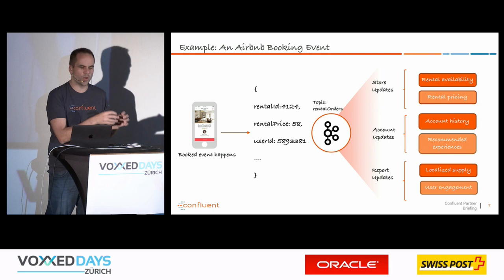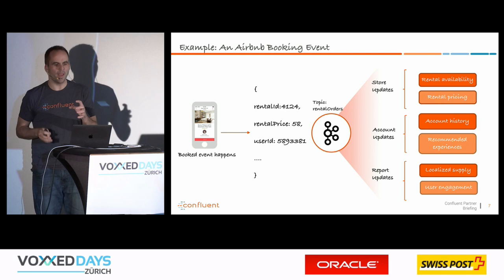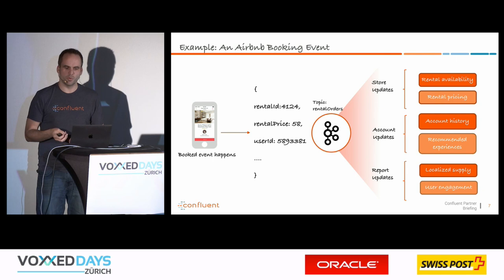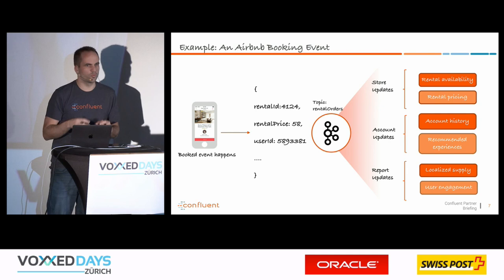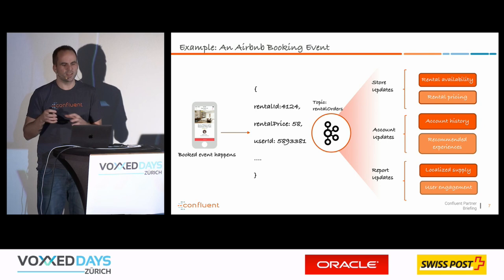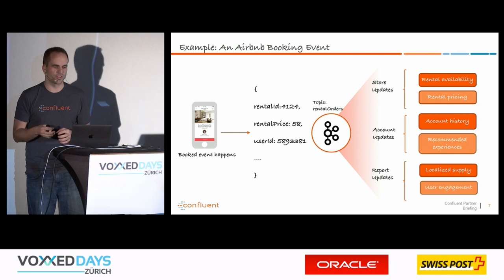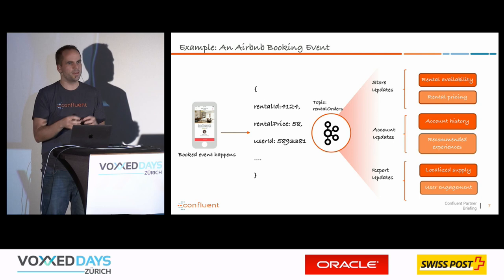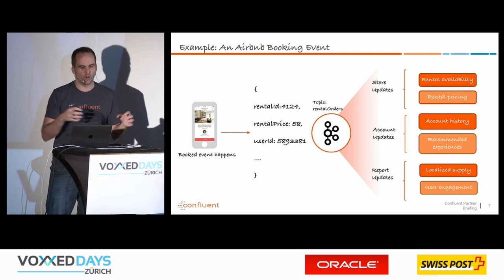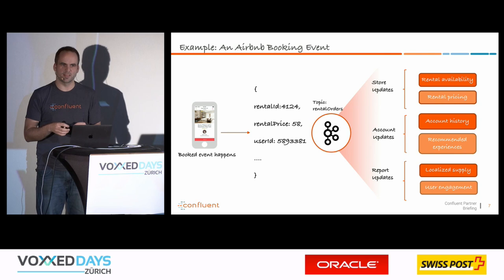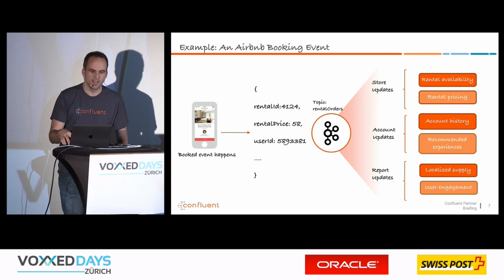A specific example: at Airbnb, when you reserve a room in the mobile app, this creates an event. That event is distributed via Kafka to many other systems — the real-time payment system, real-time fraud detection, or a batch processing system like Hadoop that analyzes bookings overnight. Kafka is the decoupling system in the middle, which is a huge advantage especially for microservices where you want to build independent services that communicate but remain decoupled.